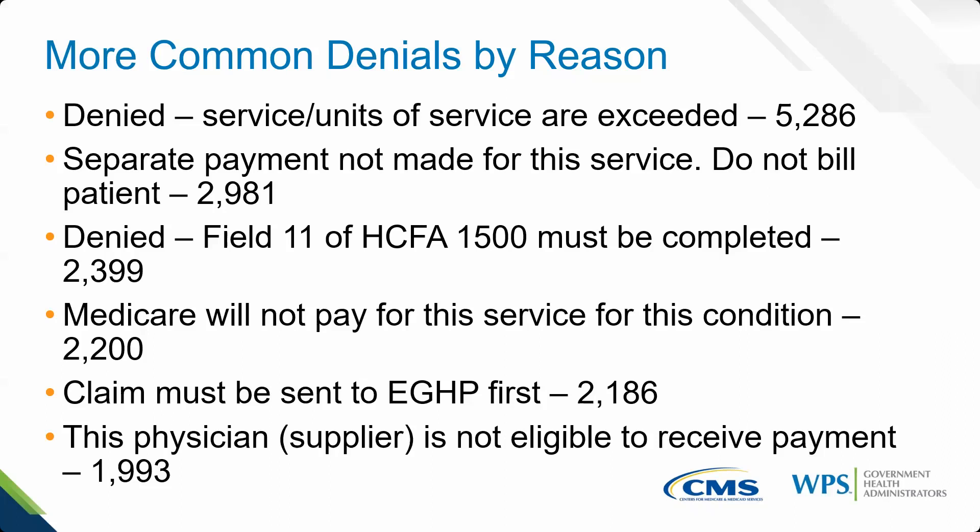'Service units are exceeded' — that is the medically unlikely edits (MUE). If you billed in excess, you'll need to submit medical record documentation to show Medicare why you should be paid more than the MUE for that item or service. 'Separate payment not made for this service' is a bundling denial. Look at the relative value units file CMS publishes — if a service has a 'B' status code, it is always bundled and Medicare will never separately pay for it. 'Field 11 of the CMS-1500 must be completed' also shows up in denials. 'Medicare will not pay for this service for this condition' — about 2,200 denials — means you need to look at the policy for that item or service.